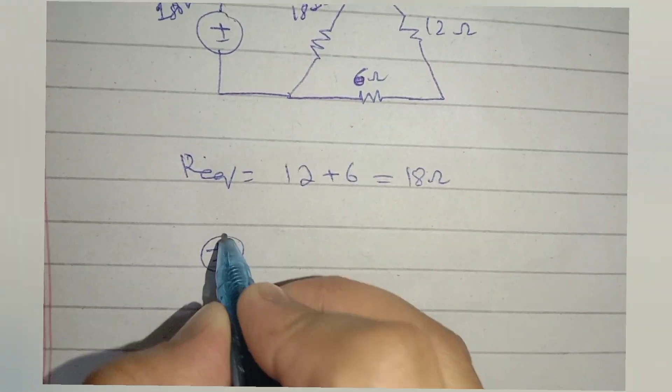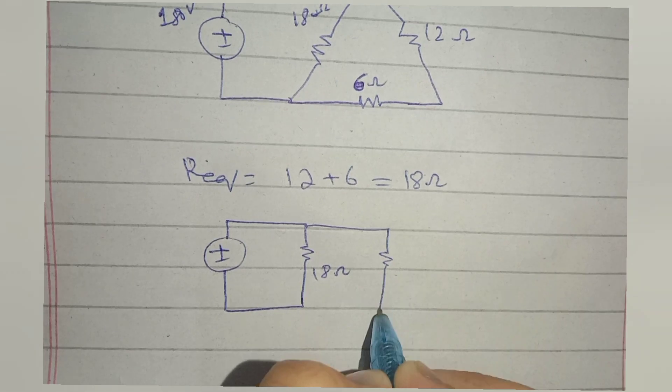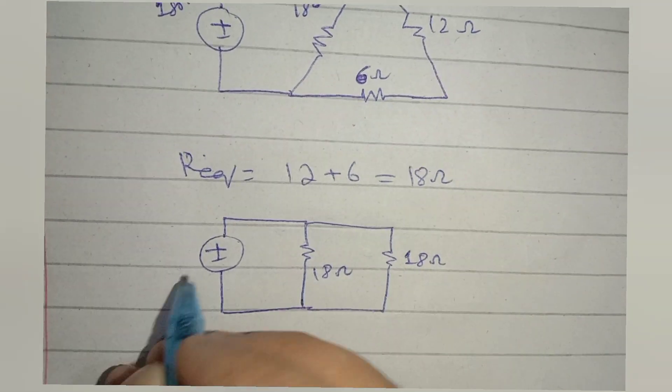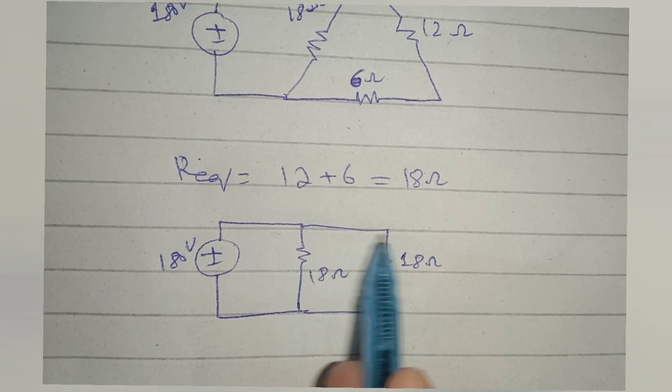We can find current in 6 ohm resistor from this point. If we know the current in 18 ohm resistor, then we will know the current in 6 ohm resistor. In parallel resistance combination, voltage remains same. Hence, 180 volts will drop in both branches.